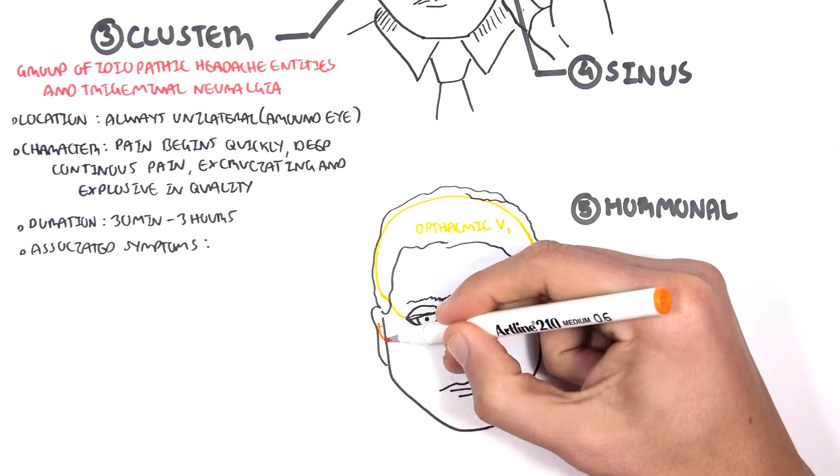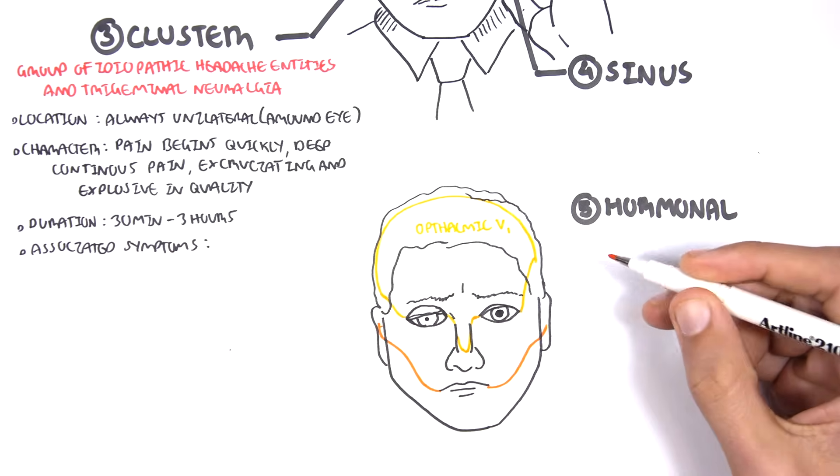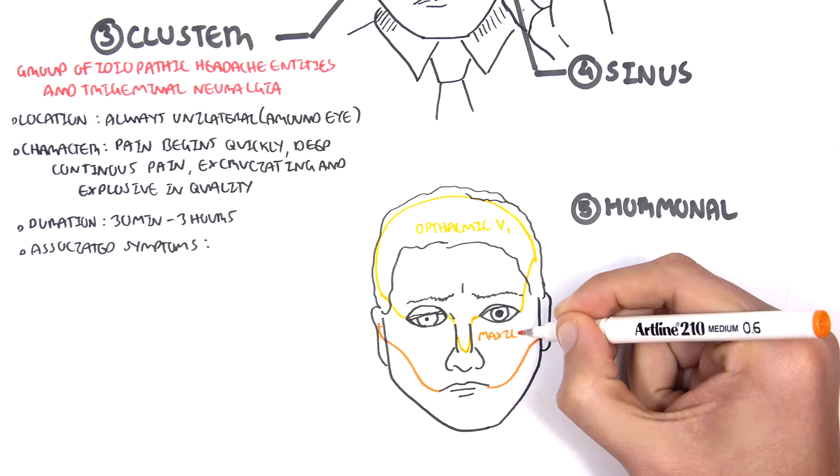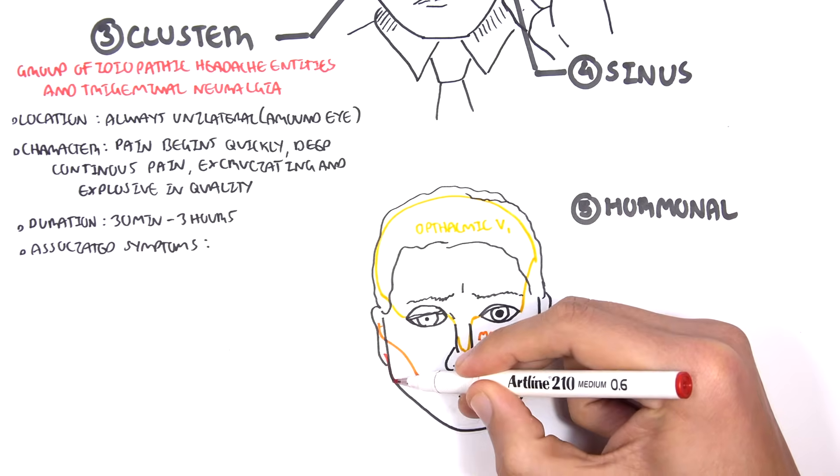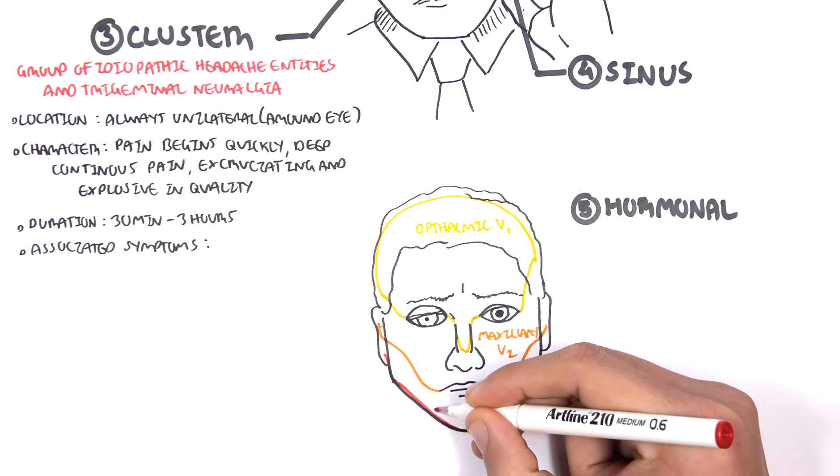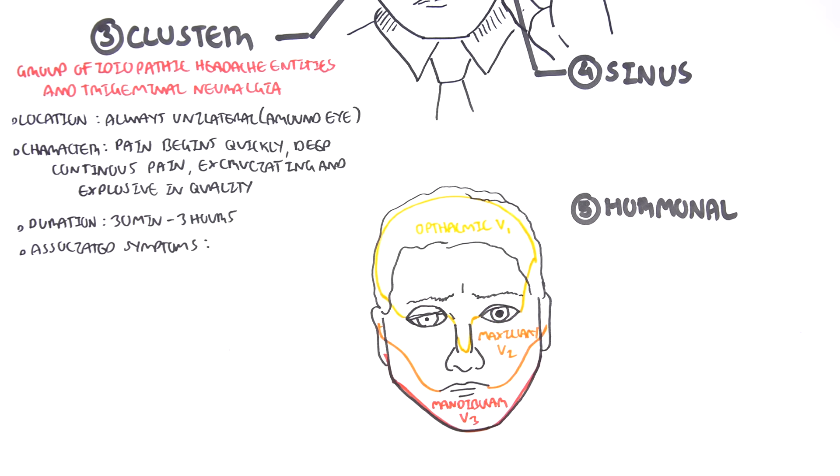It senses an area around your forehead which is supplied by the ophthalmic branch of the trigeminal. Then you have the maxillary branch V2, which supplies the nose area. And then you have the mandibular branch V3, which supplies the bottom area of your face. So the trigeminal nerve is responsible for sensation around your face. These are its three branches.